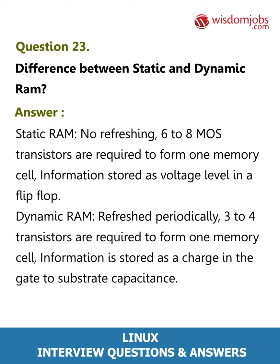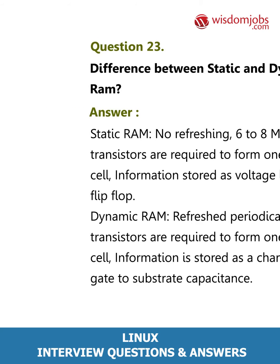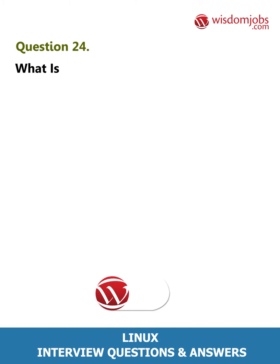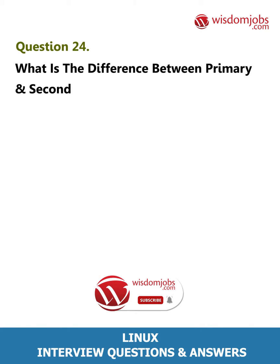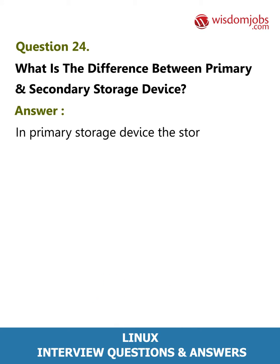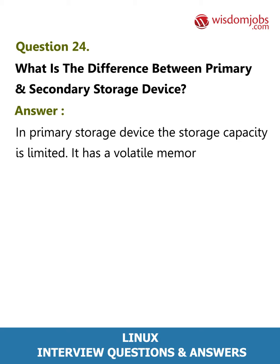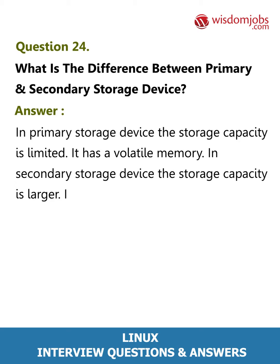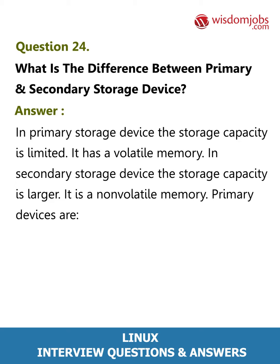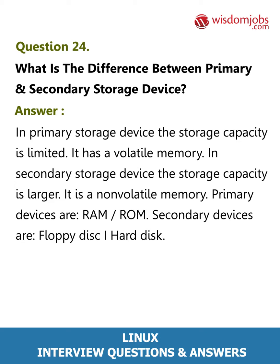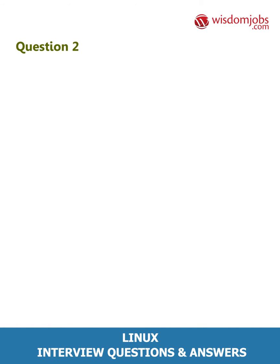Question 24: What is the difference between primary and secondary storage devices? Answer: In a primary storage device, the storage capacity is limited and it has volatile memory. In a secondary storage device, the storage capacity is larger and it is non-volatile. Primary devices include RAM and ROM; secondary devices include floppy disk and hard disk.